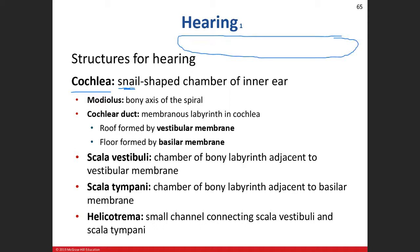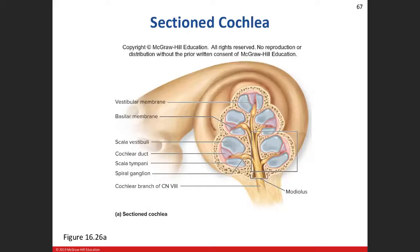The cochlea is that snail-shaped structure. Essentially it's one long tube with three chambers. There's a structure called the modiolus — that's the bony axis of the spiral, basically the center of the snail shell where the nerve fibers run. The modiolus is where those nerve cells enter and branch out to different areas of the cochlear duct, scala vestibuli, and scala tympani.